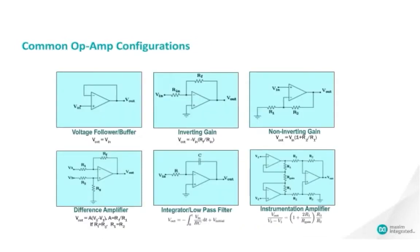There are several common op-amp circuit configurations, most of which employ negative feedback. With negative feedback, the output voltage drives only as high or as low as needed to maintain a zero difference between its two inputs. This feedback configuration greatly reduces the gain of the circuit. The circuit's overall gain and response are determined mostly by the feedback network, rather than by the op-amp characteristics.